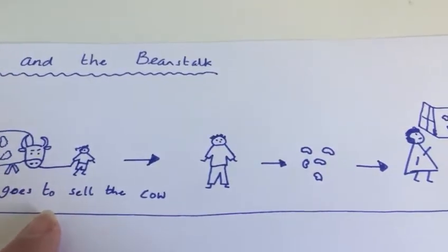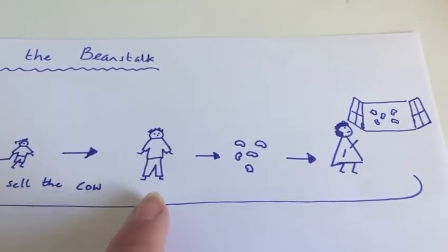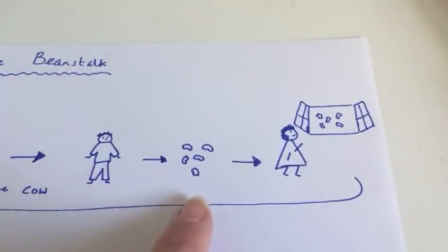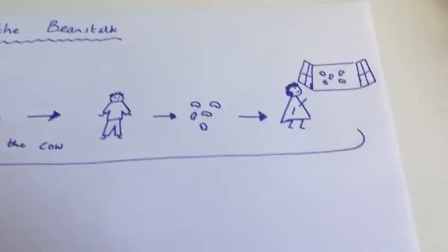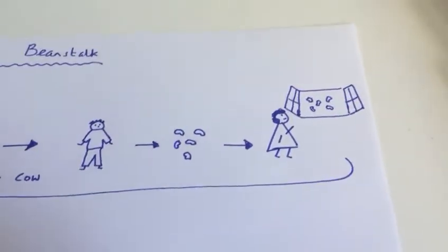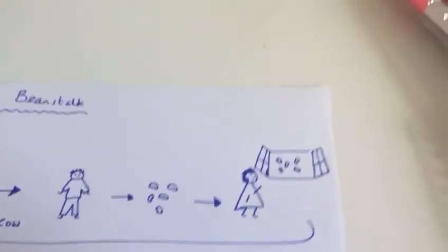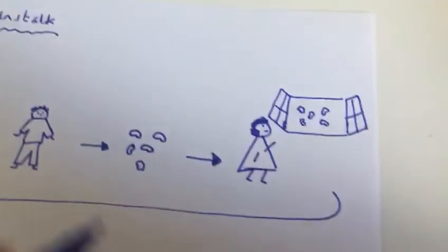So Jack goes to sell the cow and he meets a man, and the man gives him some beans. So I'm going to write the word beans here. We're going to use our phonics to help us write beans.